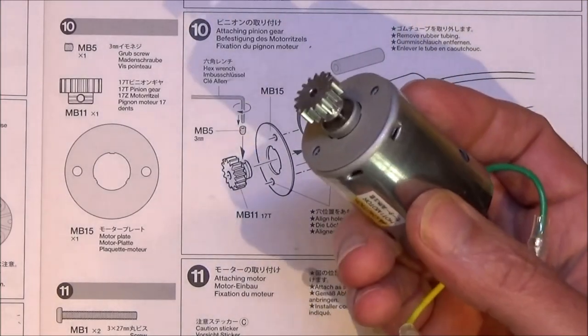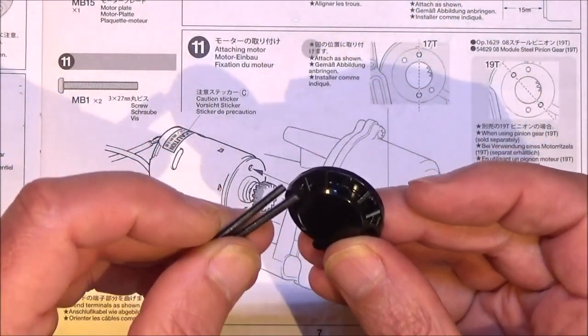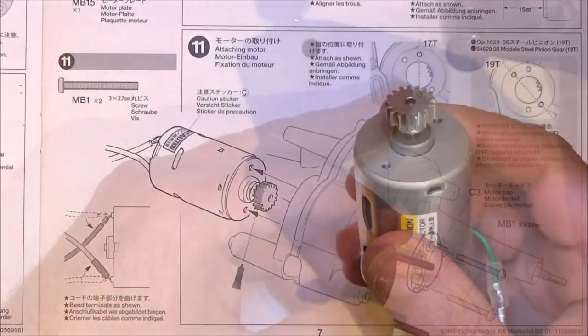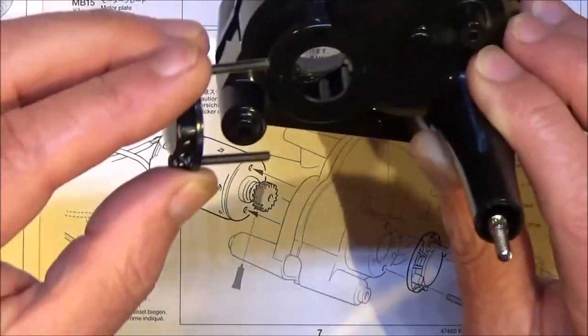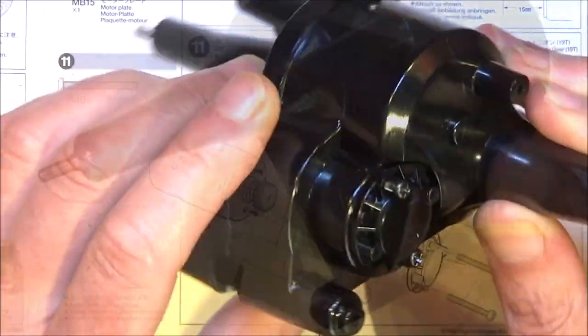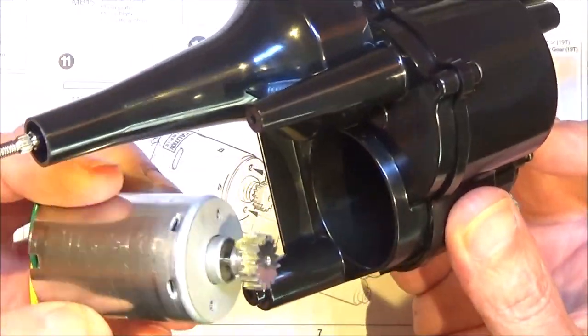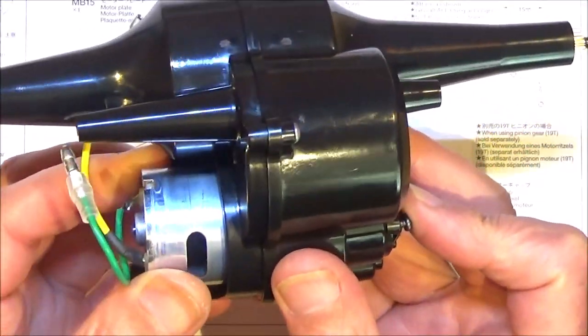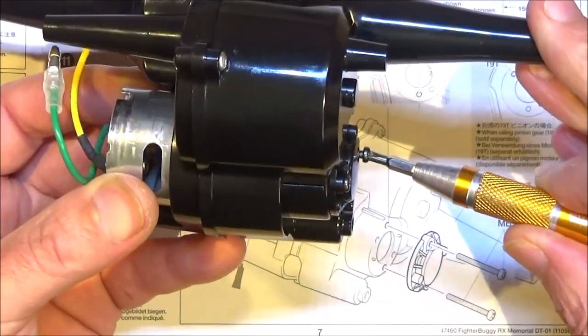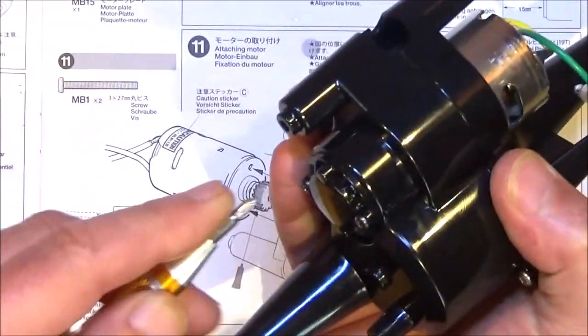On to step 11, where we're going to fit this into the gearbox case. You need part C3 and your two MB1 27mm long screws. Just put those through the holes and get that ready. Get a bit of grease on the pinion. Then, as it shows for the 17 tooth pin, you need that hole there at the top and that one at the bottom. Then you need to try and get those screws into those two holes in the motor. You can actually feel when that screw engages in the hole, so it's just a matter of feeling for it. Tighten these up, and then it's on to step 12.